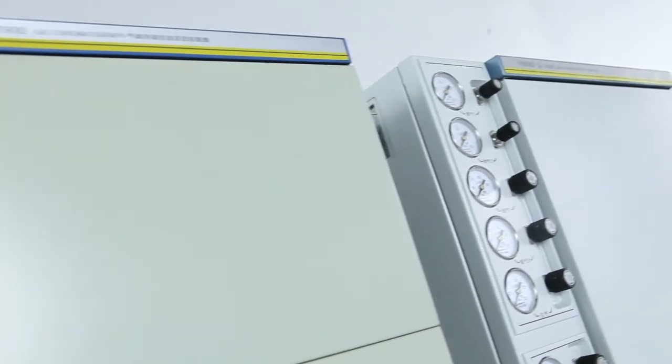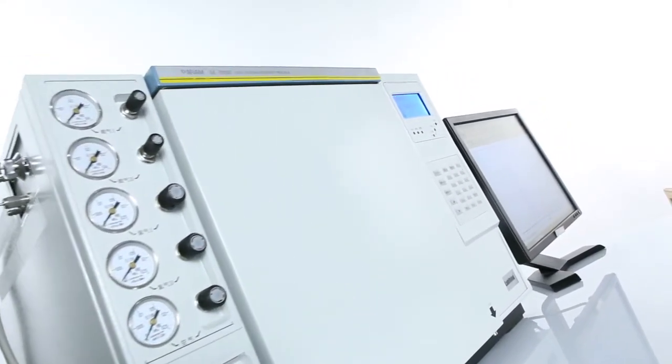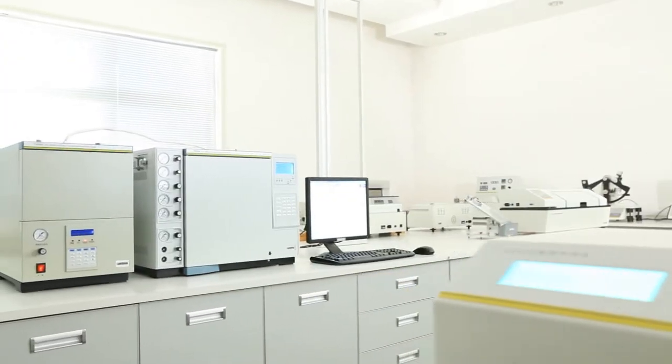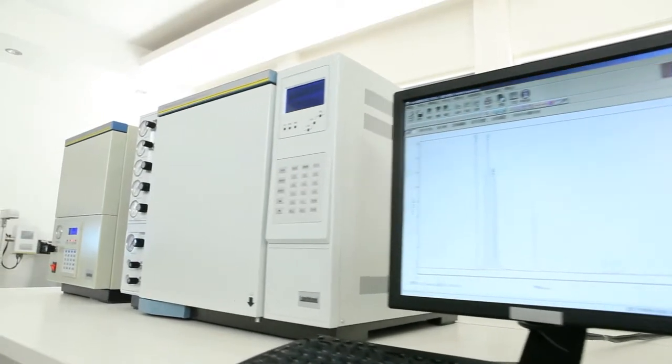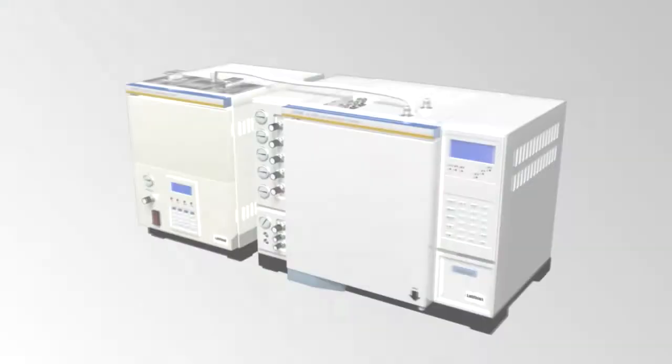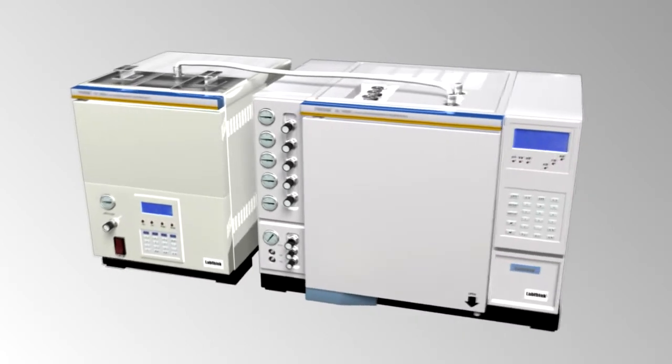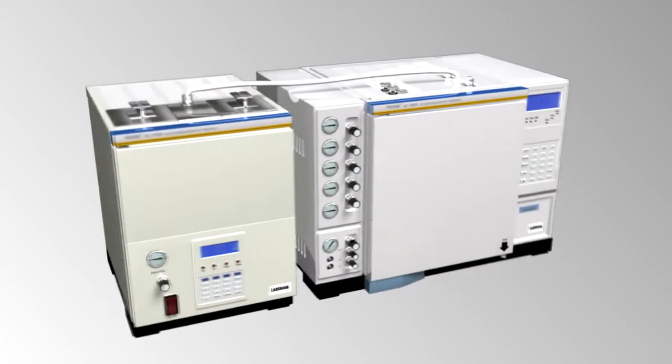The GC7800 Automatic Organic Solvent Residue Analyzing System is LabThink's latest gas chromatography system, designed for measuring the quantity of organic solvents left on printed packaging products. The system consists of an auto sampler and a GC7800 gas chromatograph.